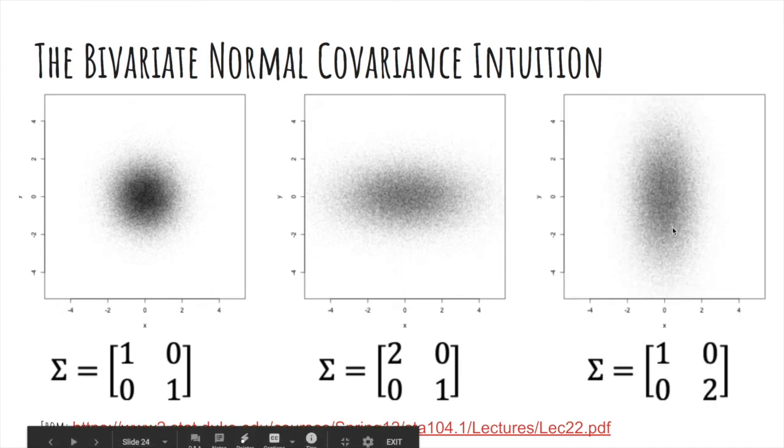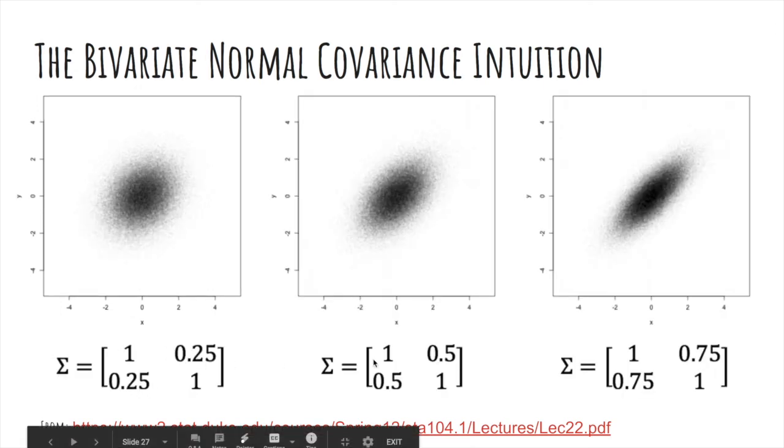And similarly, if you do the same for Y, you'll get a stretch in the vertical direction. Now look at these as 0.25, 0.5, 0.75. You'll notice it's positively sloped, but it gets tighter and longer.